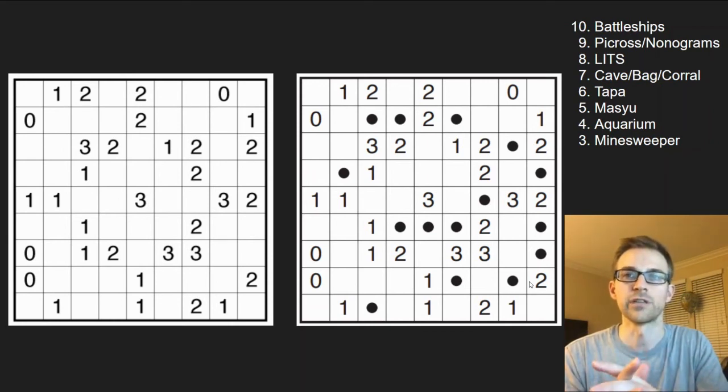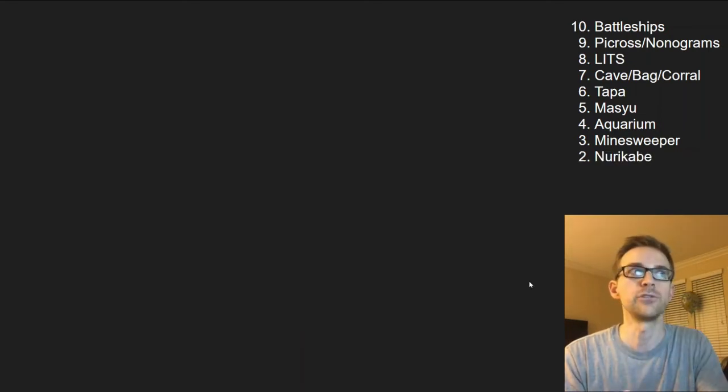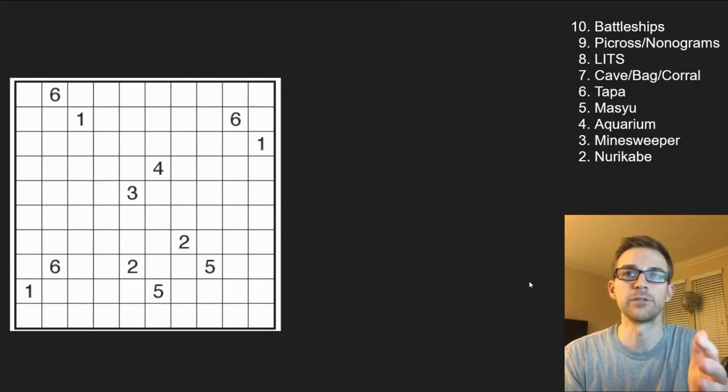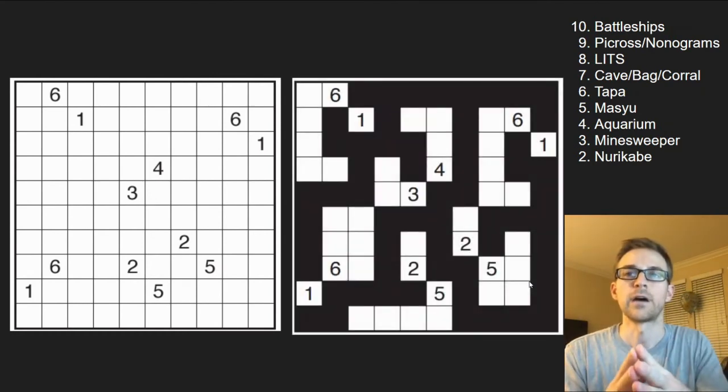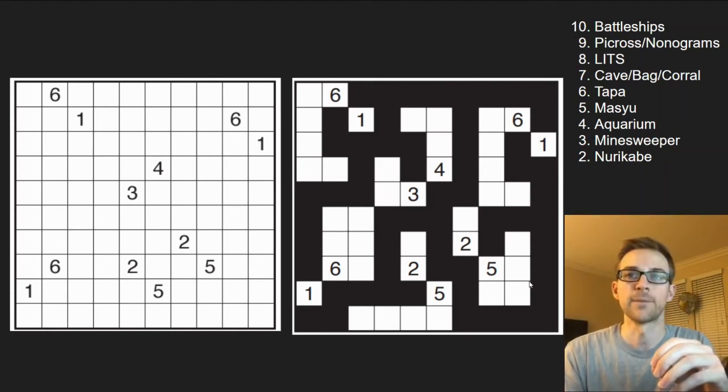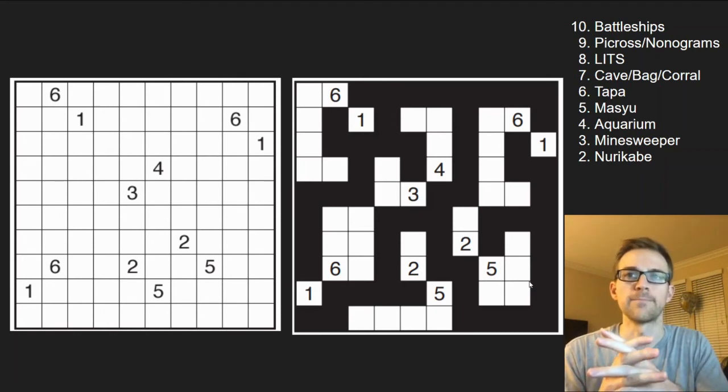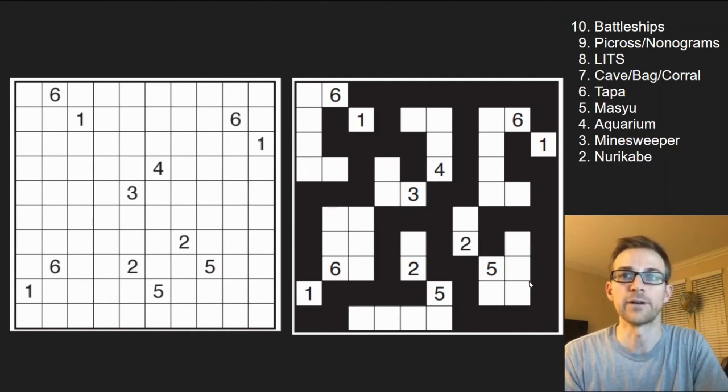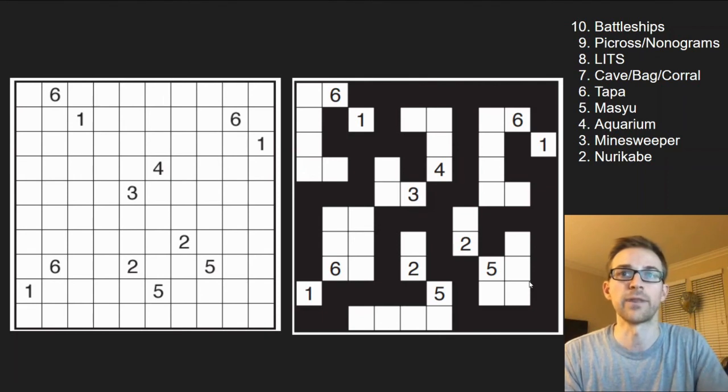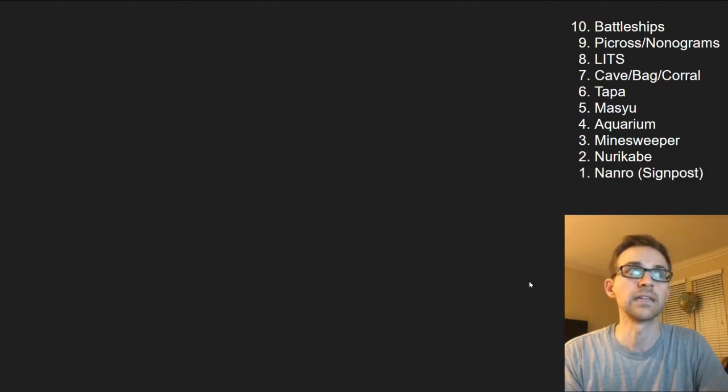Number two is Nurikabe. Nurikabe is fun because the numbers indicate islands. A six means that there's six unshaded cells orthogonally adjacent to it creating an island. And the shaded cells, think of it as water flowing between the islands, so the islands don't touch one another. I like the theme. I think the logic plays out very interesting. It's not like you're placing any numbers on the grid. Essentially you're just shading some cells and not shading others. So definitely a lot of fun. Again, a very popular one. There's tons of them out there. Again I'll post the link in the description of a great website you can go to to play them.